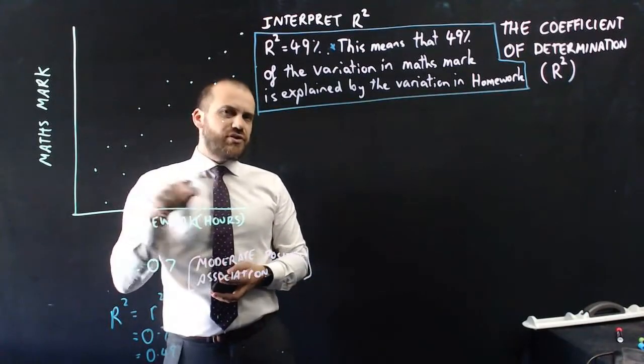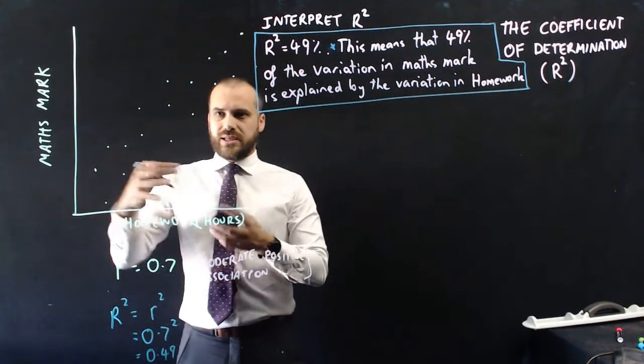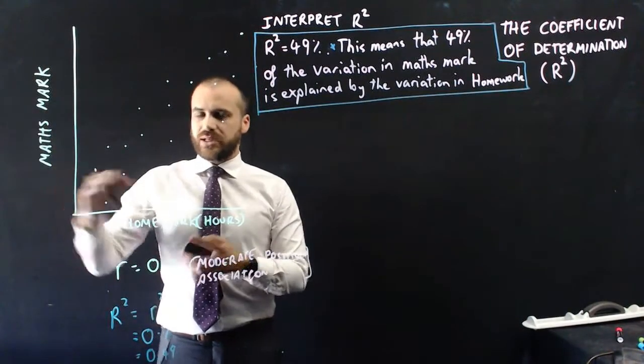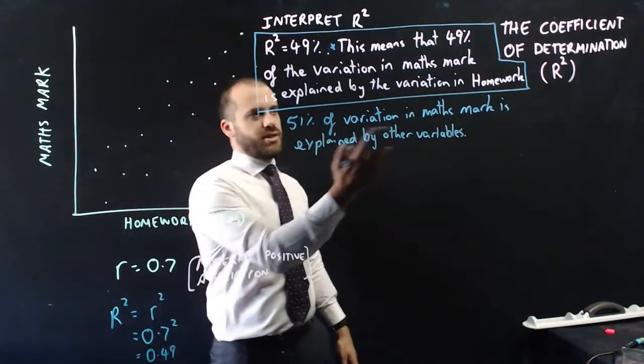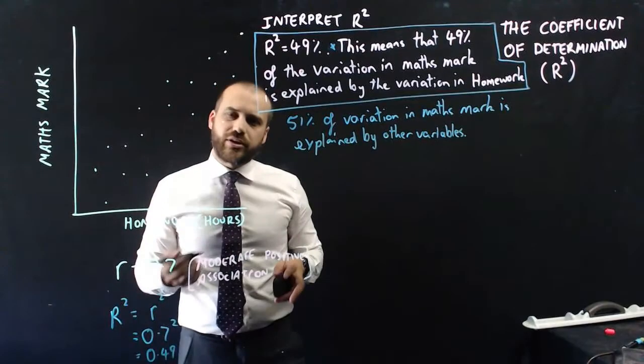That means that there's 51% of your MathsMark, or the variation in the MathsMark, is determined using other factors. So what could the 51% of variation in MathsMark be explained by? What other variables?